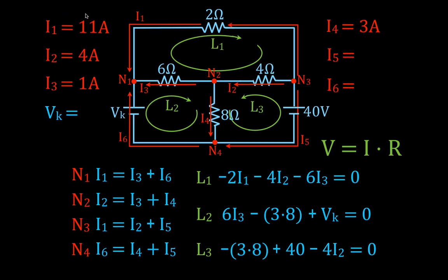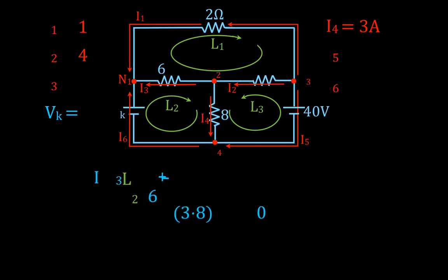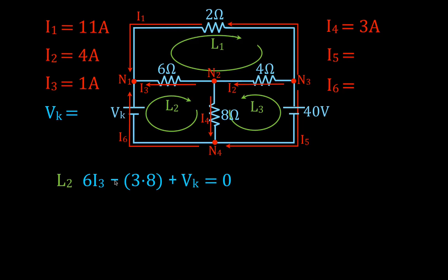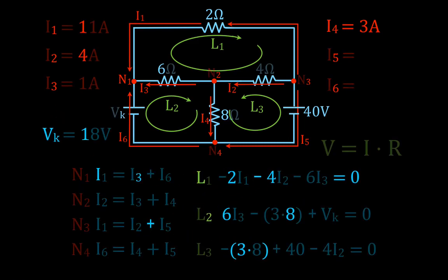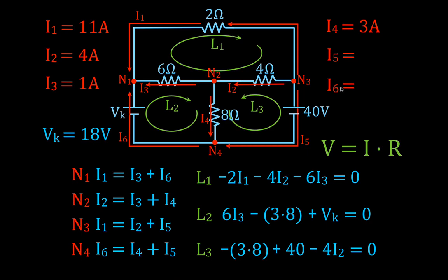Now we have all our currents except I5 and I6. But first, we don't want to forget our unknown voltage. We're going to solve for it now because we know I3. Using loop two: 6I3 minus 3 times 8 plus VK equals zero. Plugging in I3 equals 1, we get that the unknown voltage source is 18 volts. We can plug that in and come back to find I5 and I6.